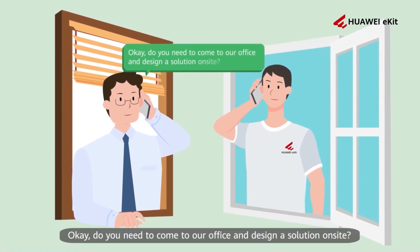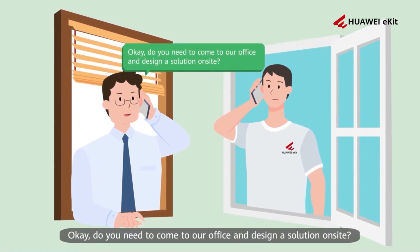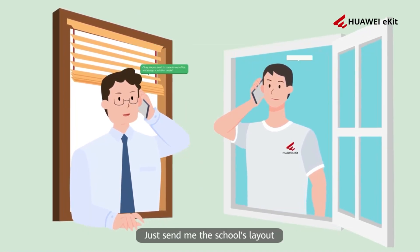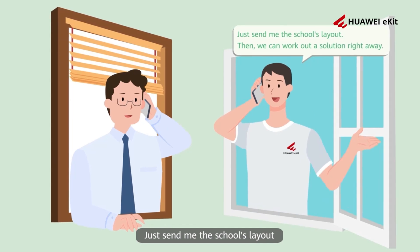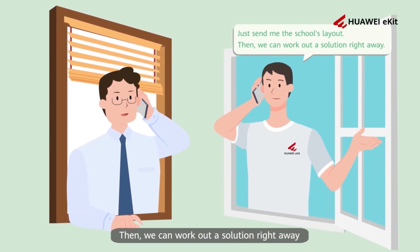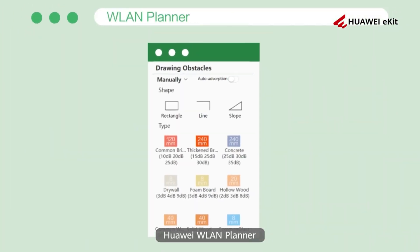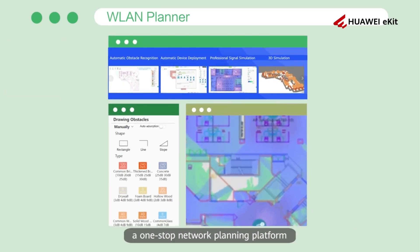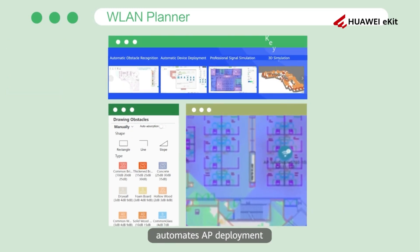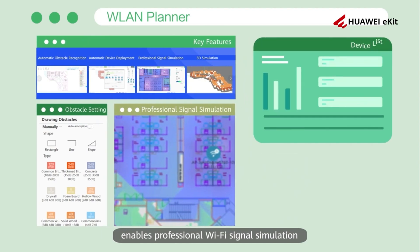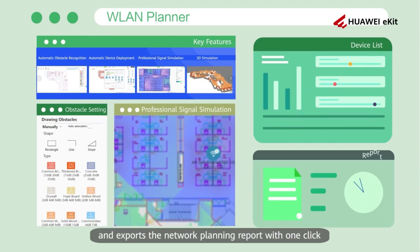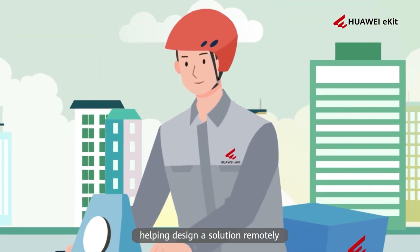Do you need to come to our office and design a solution on site? Just send me the school's layout, and we can work out a solution right away. Huawei WLAN Planner, a one-stop network planning platform, automates AP deployment, enables professional Wi-Fi signal simulation, and exports the network planning report with one click, helping design a solution remotely.